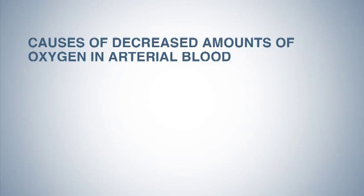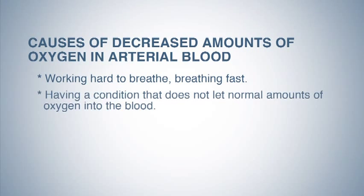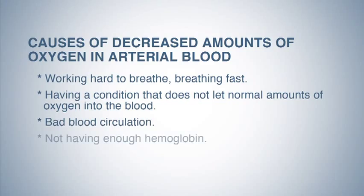Causes of decreased amounts of oxygen in our arterial blood include: working hard to breathe, breathing fast, having a condition that does not let normal amounts of oxygen into the blood, bad blood circulation, and not having enough hemoglobin.